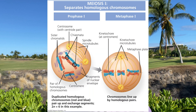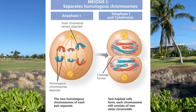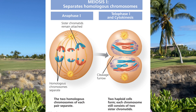In metaphase 1, the pairs of homologous chromosomes are going to be arranged on the metaphase plate. During anaphase 1, those homologs will split apart and move towards opposite poles of the cell, guided by the spindle apparatus. Then the next division will begin.